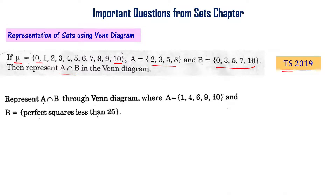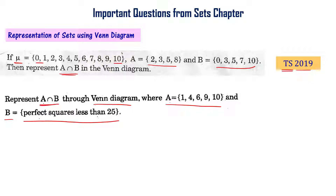Represent A intersection B through a Venn diagram, where A is a set of elements and B is the set of elements that are perfect squares less than 25. We are asked to represent A intersection B using a Venn diagram. This is from the Telangana final exam 2017.